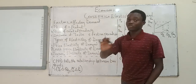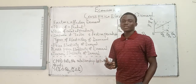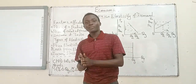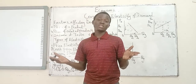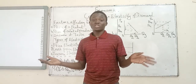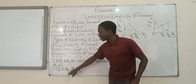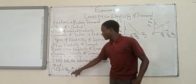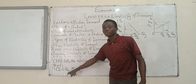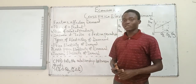Cross price elasticity of demand just tells us the relationship between two goods. How do we calculate it? It is simply the percentage change in quantity demanded of a product divided by the percentage change in price. For cross price elasticity specifically, it is the percentage change in quantity demanded of good Y divided by the percentage change in the price of good X — just give them a notation that makes us realize we are talking about two different goods.